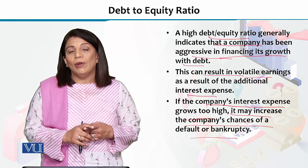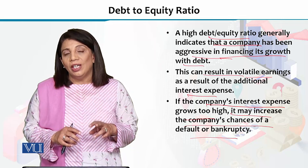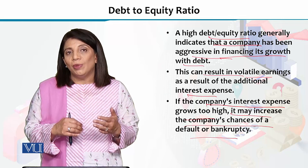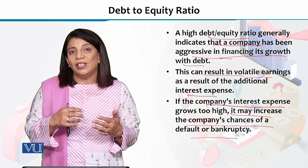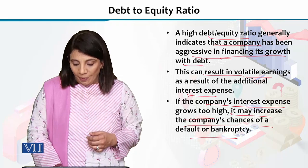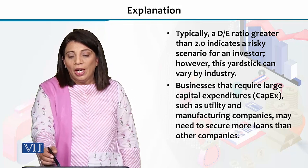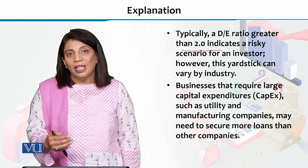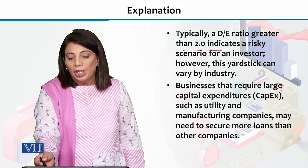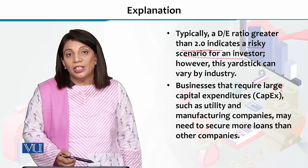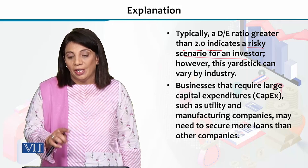Looking at the debt to equity ratio, there should be a roughly balanced proportion between debt and equity. If total liabilities are disproportionately larger than equity, that is a danger sign. We set a standard: if the debt to equity ratio is greater than two, it indicates a high level of risk for investors.